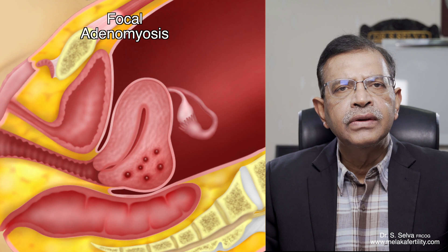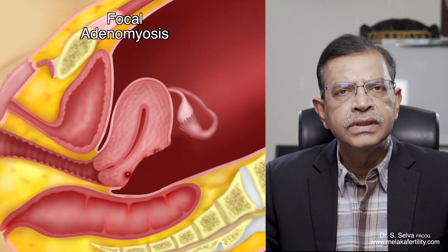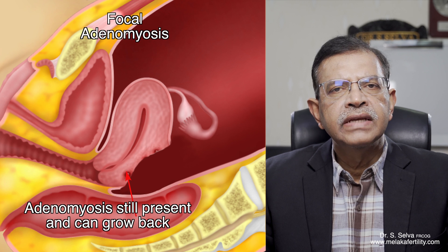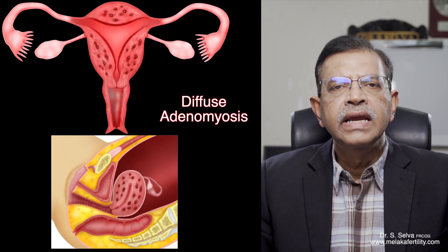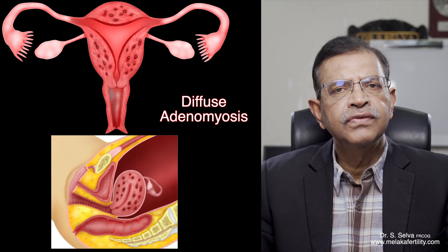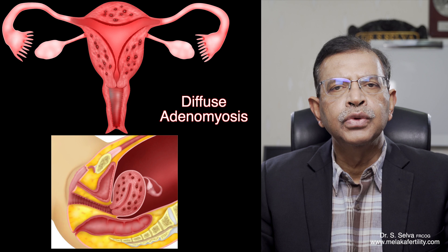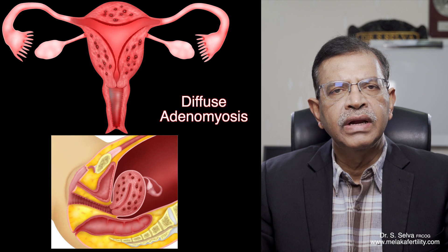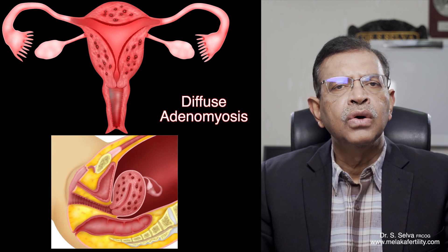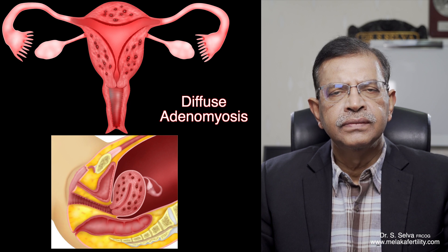In focal adenomyosis, it is possible to remove part of the adenomyosis. However, some adenomyosis will still be present in the uterus and it can grow back. In diffuse adenomyosis, since the endometrial tissue is found all over the uterus, it is impossible to remove the adenomyosis. When surgery is performed, usually the whole uterus has to be removed.